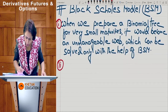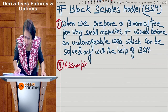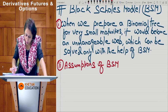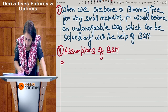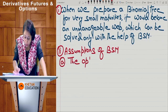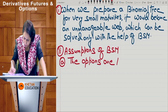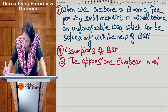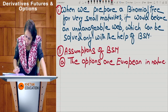Number two: assumptions of BSM. I'm giving these because they might ask you in a theory question about the assumptions of BSM. Number one: the options are European in nature.